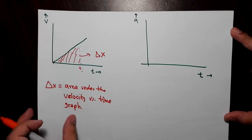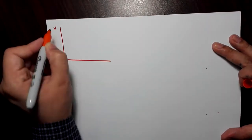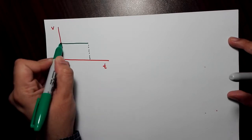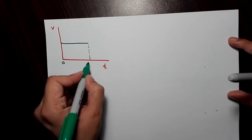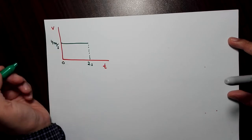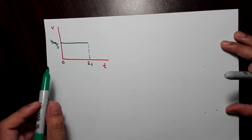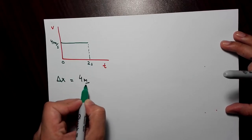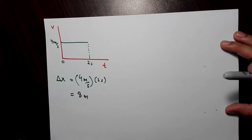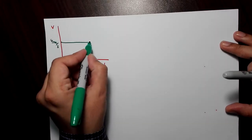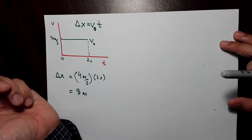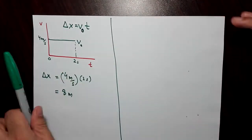Let's look at simple examples. The simplest velocity versus time graph is a horizontal line — a constant velocity. Let's say the velocity is four meters per second from t equals zero to t equals two seconds. The displacement is the area of this rectangle: four meters per second times two seconds equals eight meters. In general, for a fixed velocity, delta x equals v-naught times t.